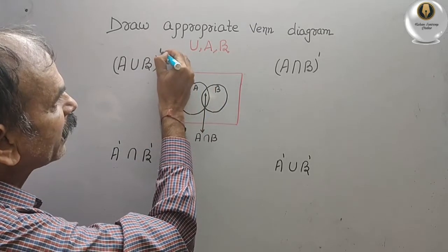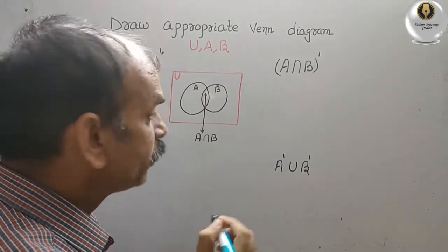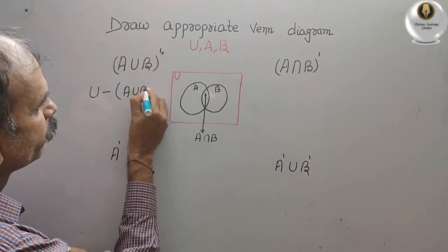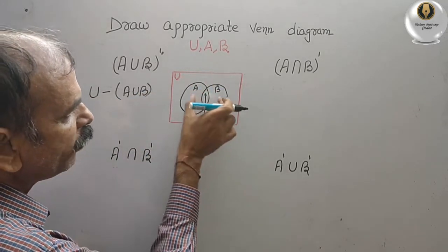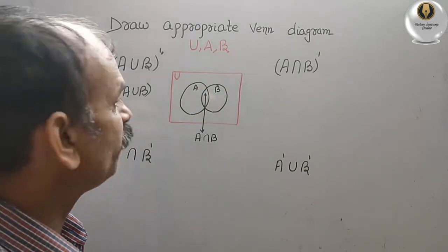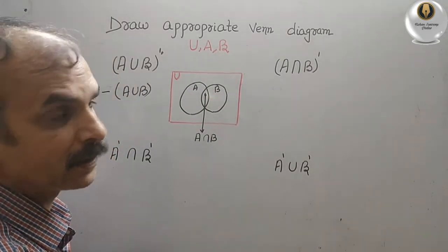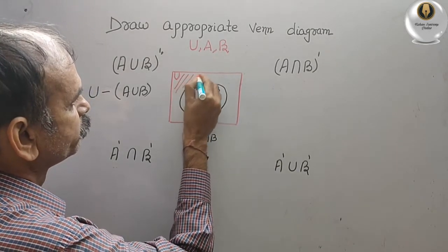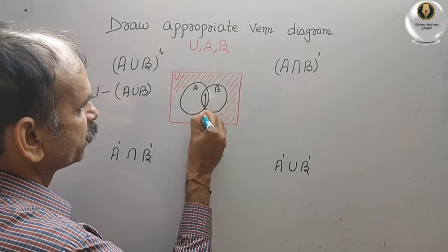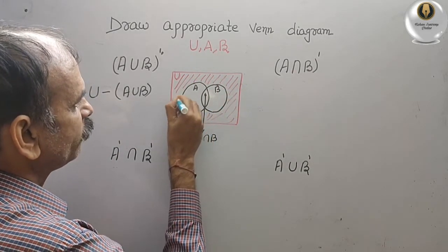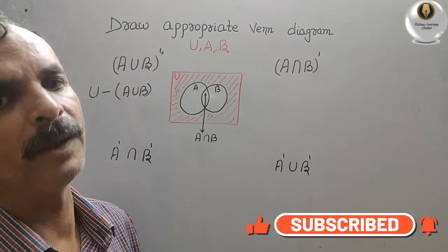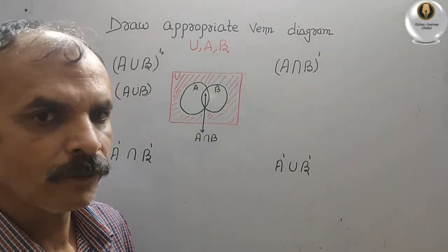Now they have given the complement of A union B. That means every item in A and B should be there, then we take the complement, which means U minus A union B. So if you subtract those two, what will you get? You will get the remaining part — except these two circles, we shade everything. So the shaded part is your complement part.